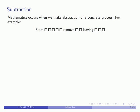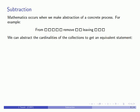What sort of abstractions can we make here? I might abstract the cardinalities of the different collections to get an equivalent statement. I'm starting with a collection with cardinality 5, removing a collection with cardinality 2, and leaving a collection with cardinality 3.